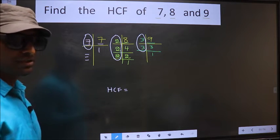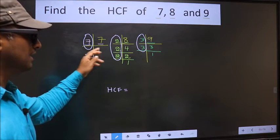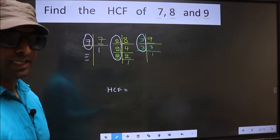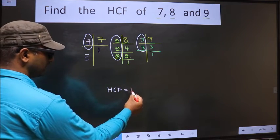Therefore, we do not have any number present in all the 3 places. In these situations, you should always take HCF to be 1.